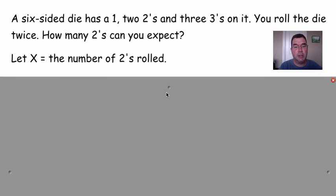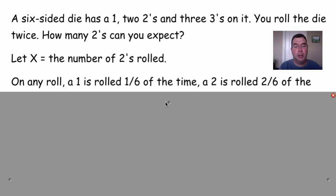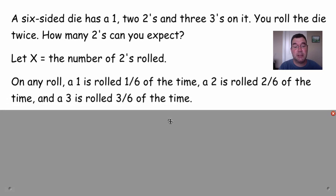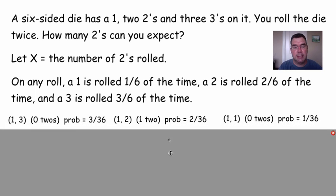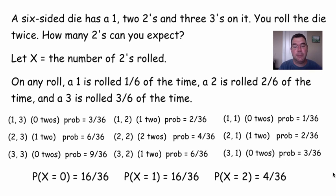So x is going to be the number of 2s that are rolled. On any roll, a 1 is going to show up 1/6 of the time, a 2 is going to show up 2/6 of the time, and a 3 is going to show up 3/6 of the time, because that's the way the die is set up. And what I've done again is I have figured out all 9 possible things that can happen, along with how many 2s show up in that event. And just like in the last example, I figured out what the probabilities were.